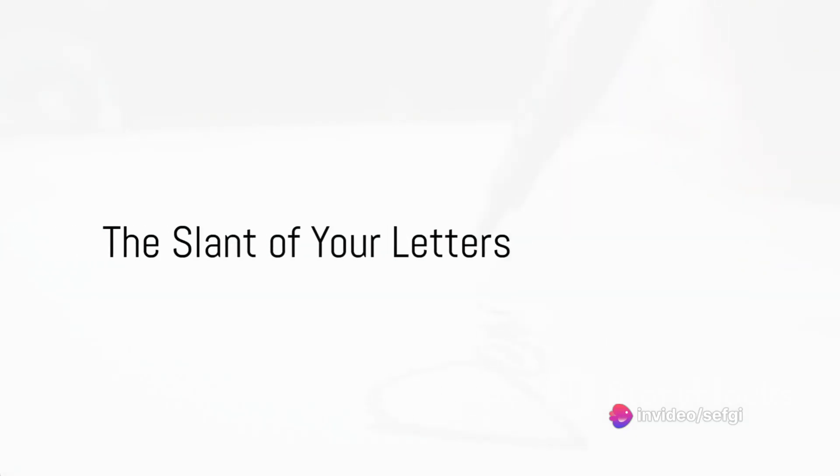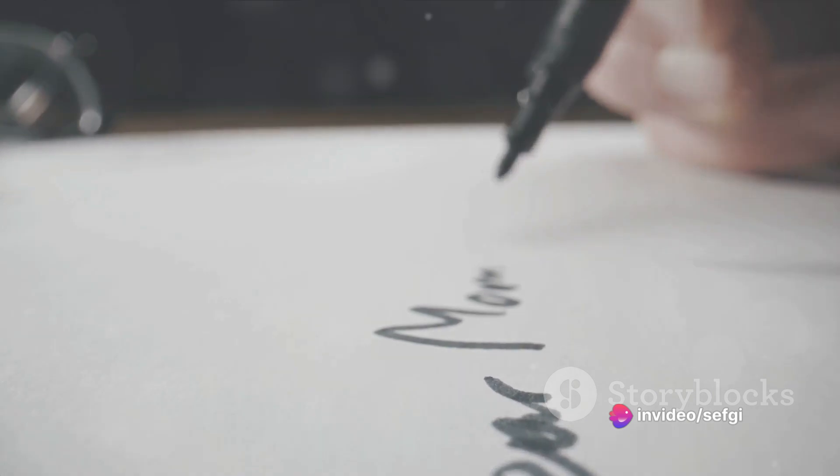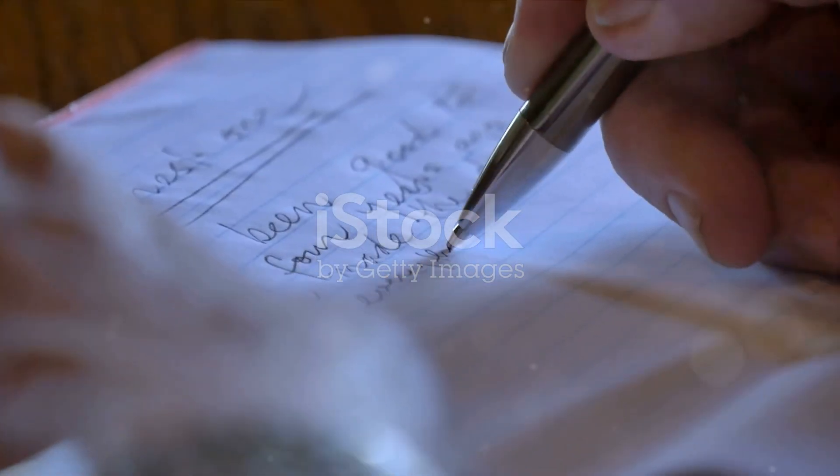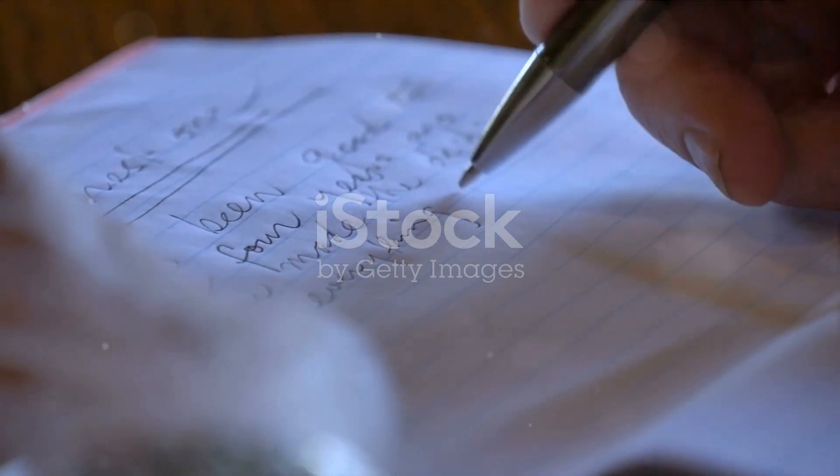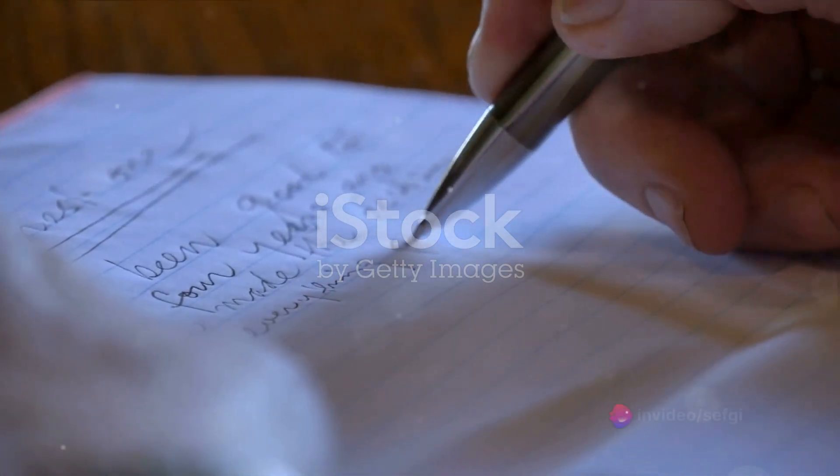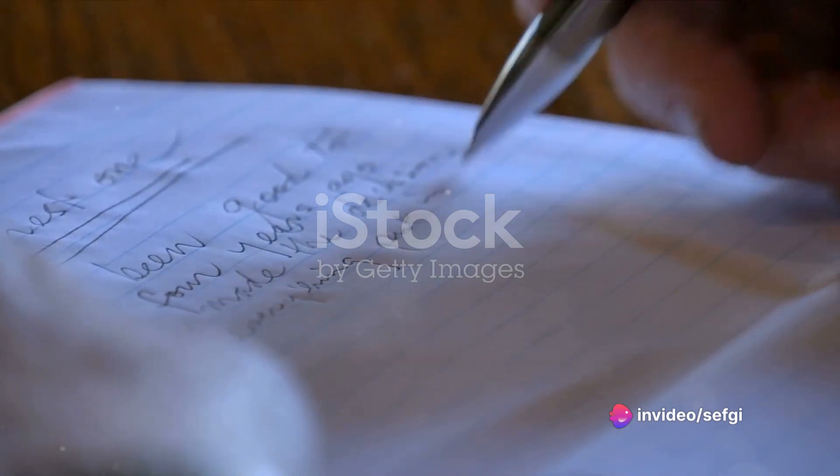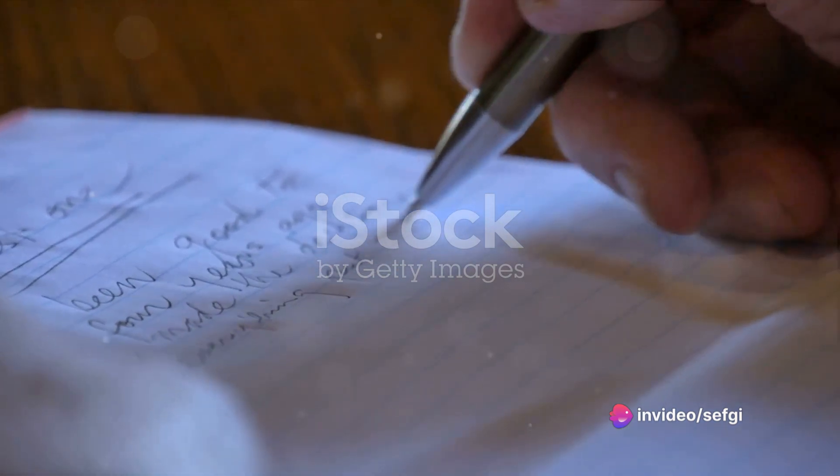Now let's talk about the slant of your letters. Yes, even the direction your letters lean can tell a story about you. In the fascinating world of graphology, the slant of your letters is seen as a window into your emotional world. It's not just about the words you jot down on paper, but also the way you write them that adds another layer to your story.